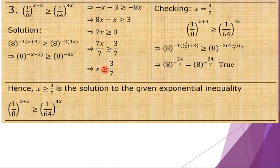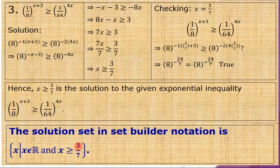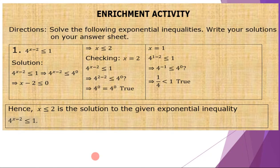For number three, the solution set is X greater than or equal to three-sevenths (3/7). The solution set in set builder notation is the set of all X's such that X is an element of the real numbers and X is greater than or equal to three-sevenths.